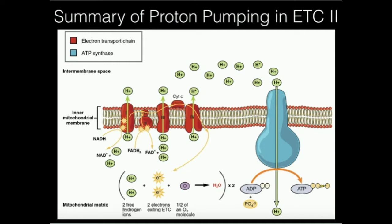A pump is a name you give a transporter that is doing transport actively. Now these pumps don't get energy from ATP — they're getting it from electrons like NADH and FADH2. So not all active transport actually has to use ATP; some of them can use other energy sources. In this case it's NADH and FADH2, and the energy from those is powering the pumping of protons from the matrix into the intermembrane space.